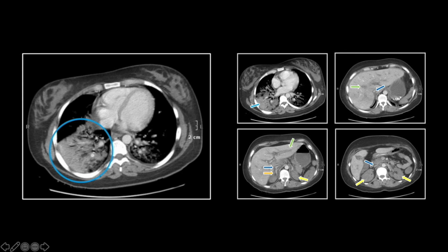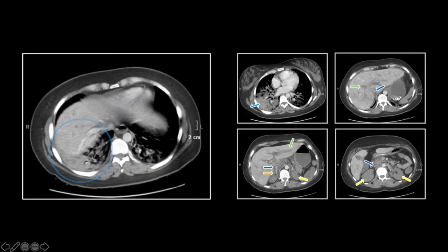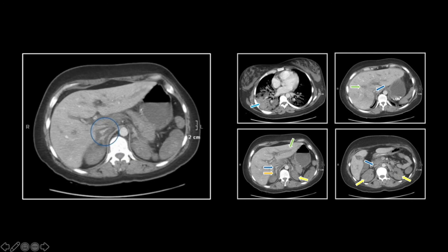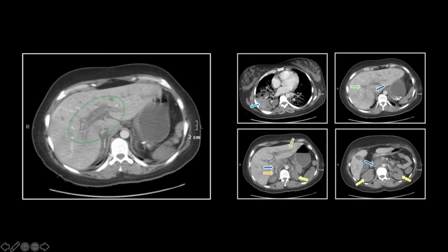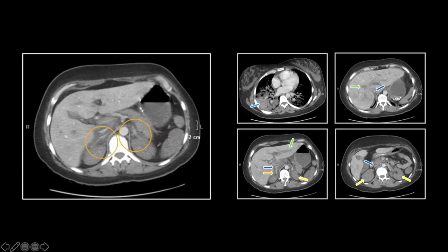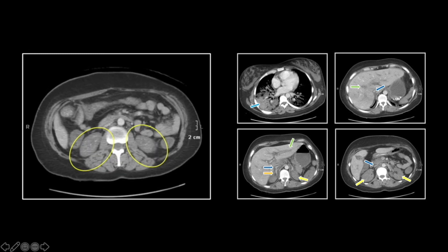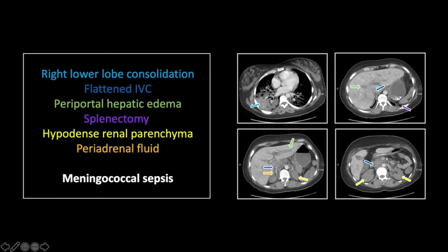On the cine, you can see the right lower lobe consolidation, IVC flattening, periportal edema, the splenectomy, and the hyperdense adrenal glands. Lastly, the markedly hypodense kidneys, again related to hypoperfusion. This was accurately called by our radiologist — the emergency room was shut down, all involved parties were prophylaxed, and the outcome was as good as it can be with an infection of this severity.